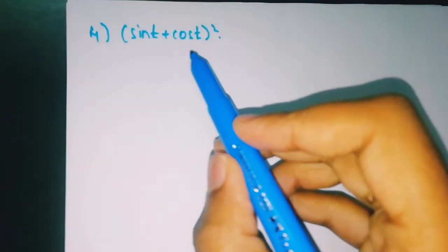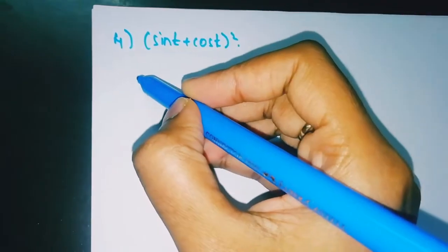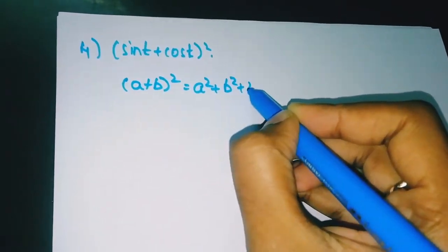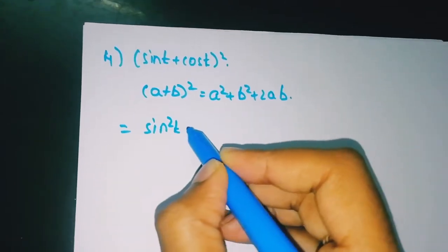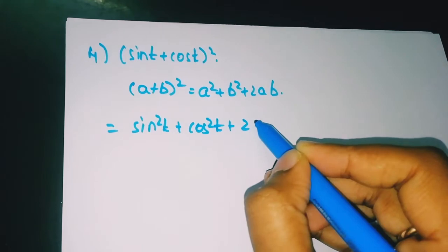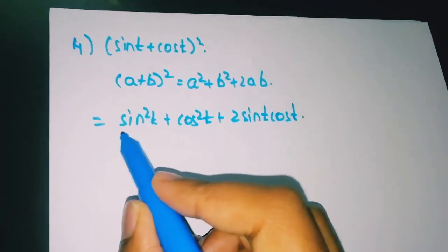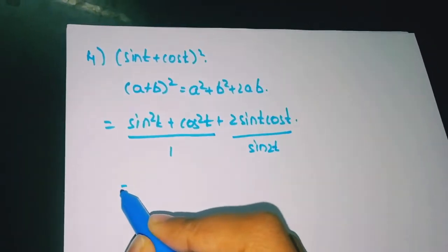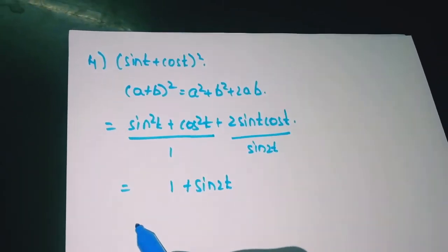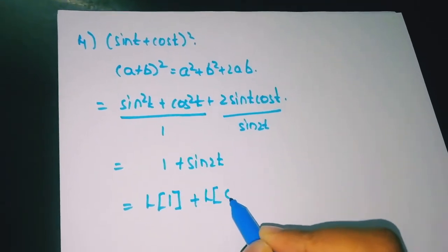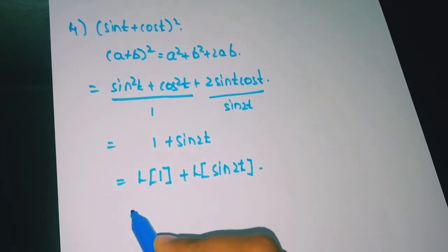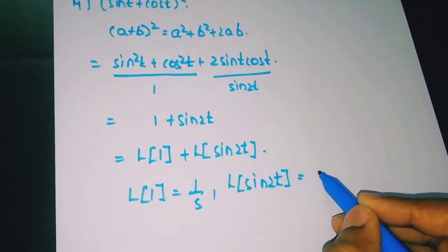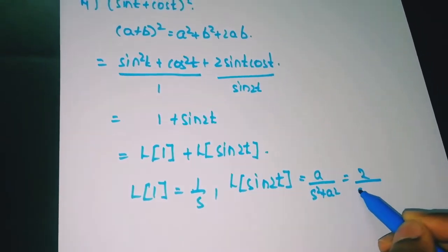Coming to the fourth problem: Laplace of (sin t + cos t)². This is also in the form (a + b)² = a² + b² + 2ab. Expanding: sin²t + cos²t + 2·sin(t)·cos(t). We know sin²t + cos²t = 1 and 2·sin(t)·cos(t) = sin(2t), so this simplifies to 1 + sin(2t). Laplace of 1 is 1/s and Laplace of sin(2t) is 2/(s² + 4).